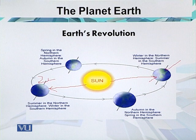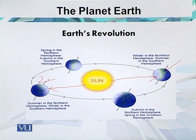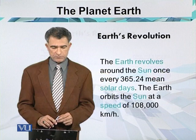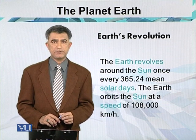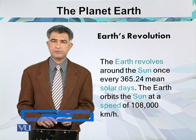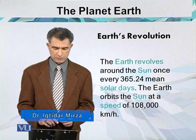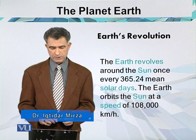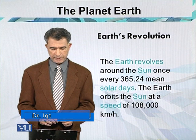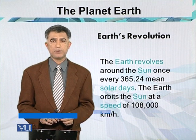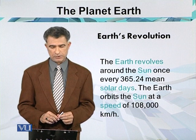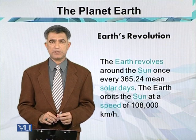At the same time, the northern hemisphere receives less light and heat — in other words, we enjoy the winter season. The Earth revolves around the Sun once every 365.24 days, which are called solar days. The Earth orbits the Sun at a speed of about one lakh eight thousand kilometers per hour.